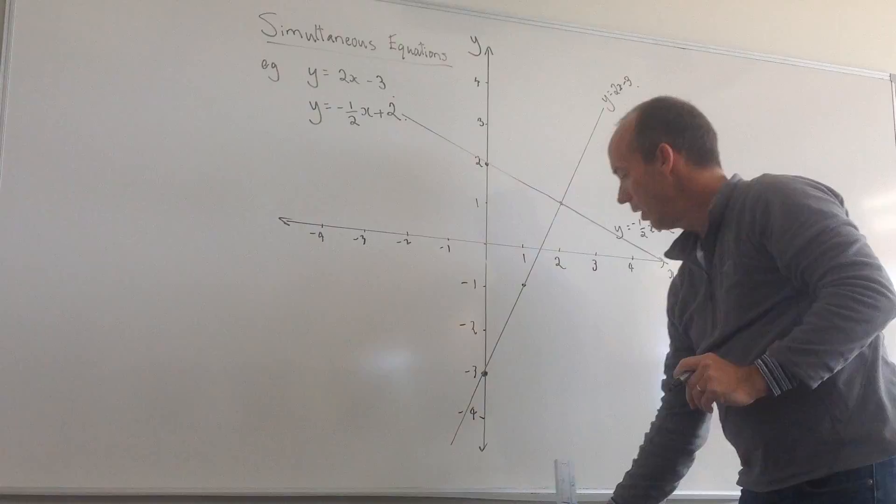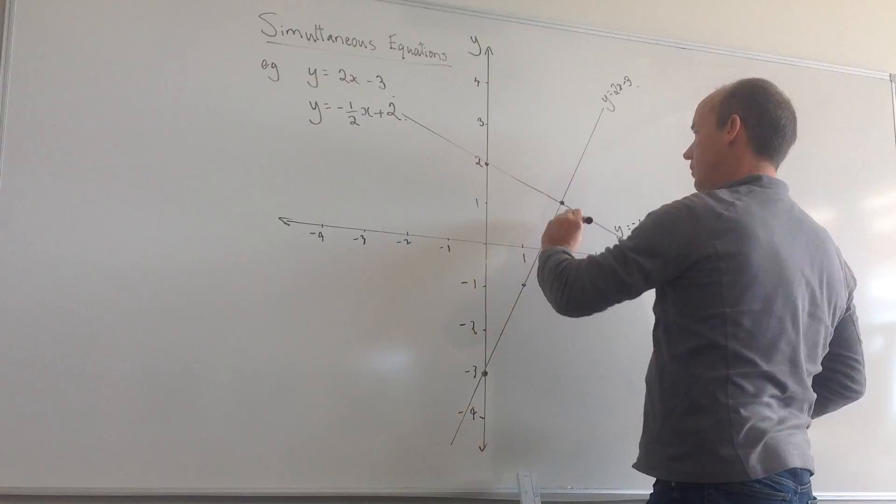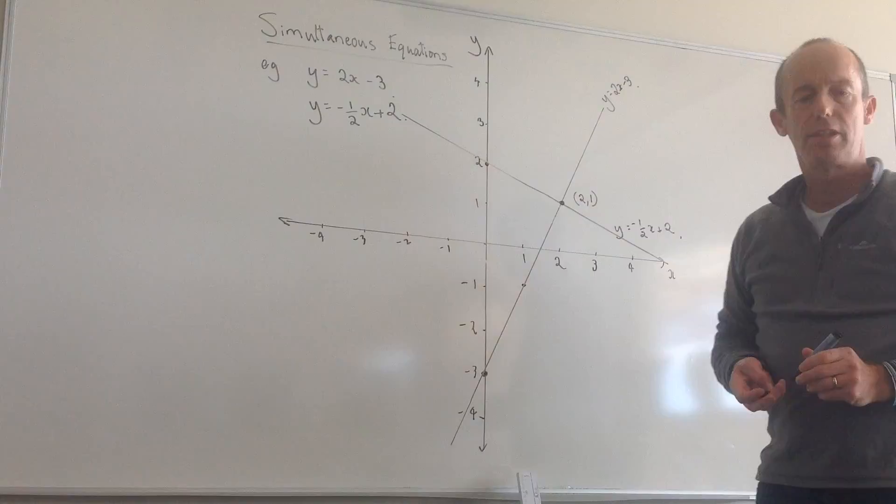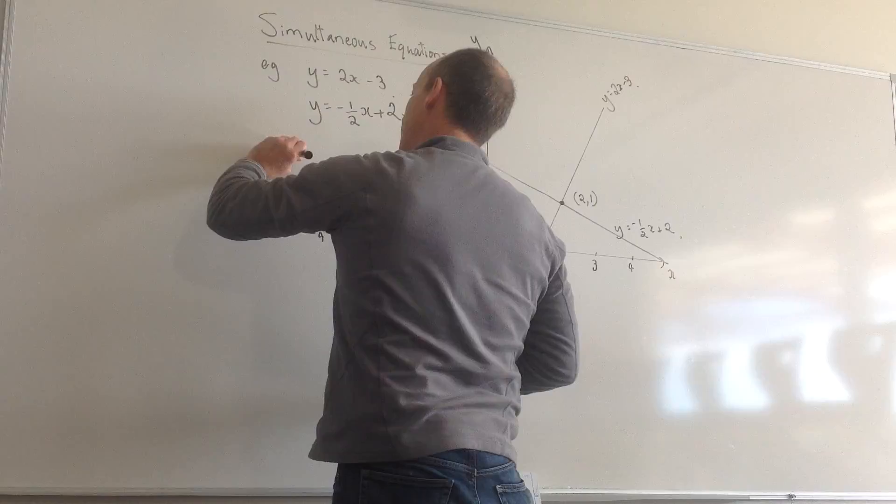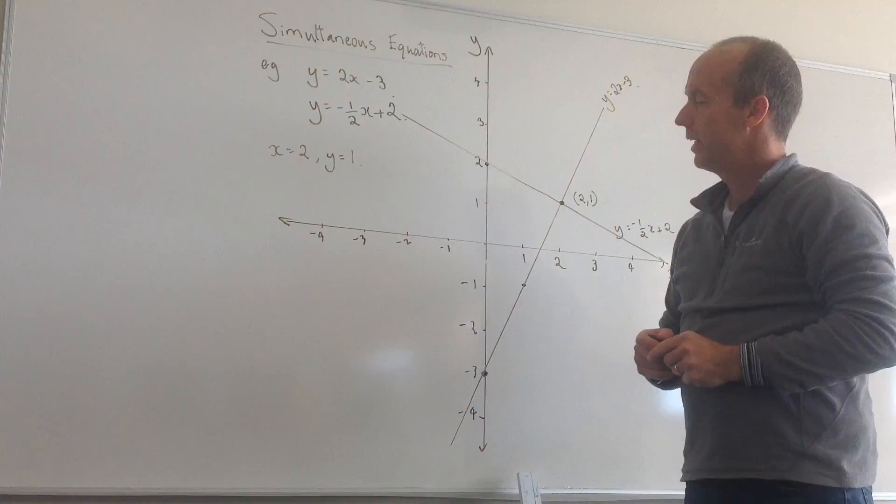If we look at the point where that crosses, that's at the point x equals 2, y equals 1. That gives me the solution for these simultaneous equations. My answer is x equals 2, y equals 1. That's how we solve simultaneous equations graphically.